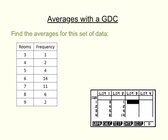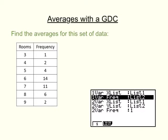Now we're going to look at how we can do it for a frequency table. Much of the process is very similar. We first type the data into list 1 and the frequencies into list 2. Once they're in, we again hit Calc and go to Set. This time the settings are slightly different — the X list is still list 1, but the frequency must say list 2, since that's where we put the frequency column. If it just says 1, click List and type 2. The top two parts must say list 1 and list 2 before you carry on.